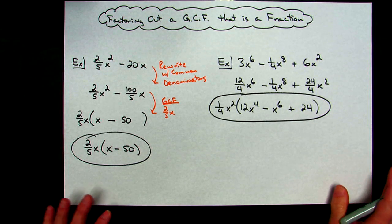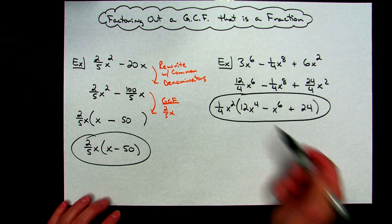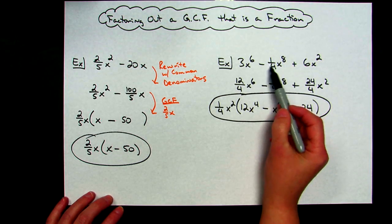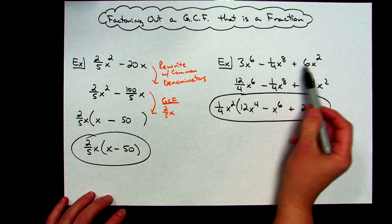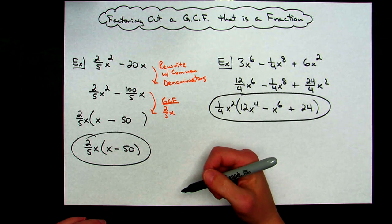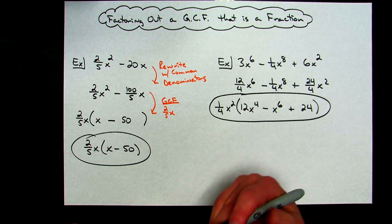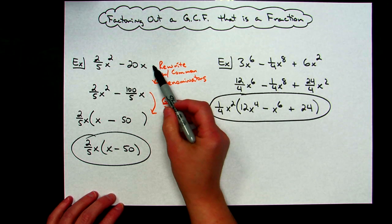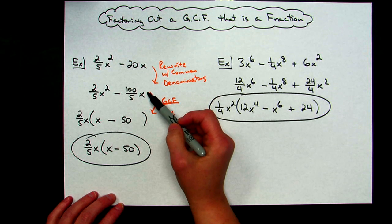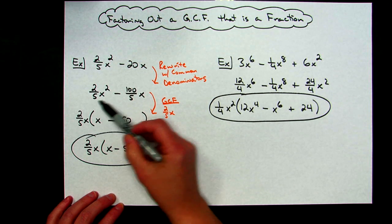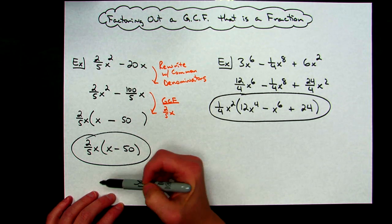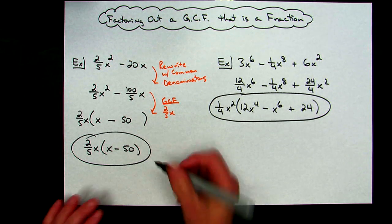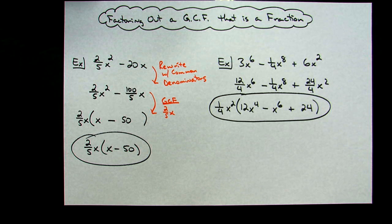So just a little trick: if you end up with fractions as coefficients and you're trying to take out the greatest common factor, my suggestion is to get common denominators so that all of the coefficients look like fractions — it's much easier to find your greatest common factor at that point.